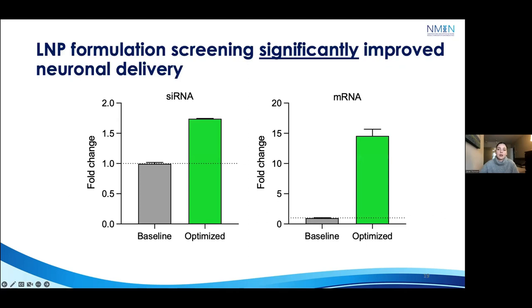Compared to our MC3-DSPC benchmark, this project has been able to improve neuronal delivery of siRNA about 1.7-fold and of mRNA over 14-fold. We're really excited about these results and the potential of these formulations to enable proof-of-concept studies in neurons, which are a notoriously difficult cell type to transfect. We also became very interested in using these systems to attempt gene editing in neurons.